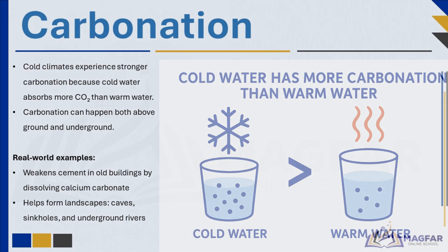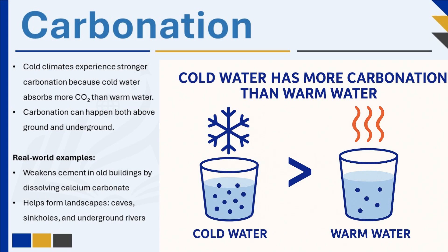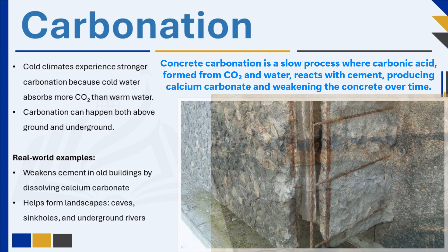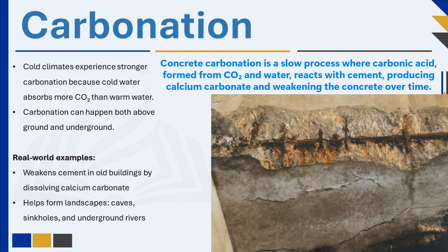Interestingly, cold water absorbs more carbon dioxide than warm water. This means that in cold climates, rainwater tends to form stronger carbonic acid, making carbonation more intense in these regions compared to warmer ones. Carbonation can occur both underground and above the ground. You can observe the effects of carbonation on cement in old buildings, where carbonic acid gradually dissolves the calcium carbonate in the cement. Over time, this process can weaken structures and even lead to collapse if not managed.